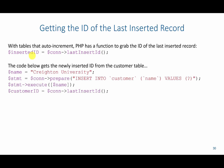For example, if I wanted to insert a new customer named Creighton University, I would say INSERT INTO customer the name and the values with a question mark. This question mark gets substituted with the name via the execute statement to insert the new record. We then look at the connection and get the last inserted ID, which would be Creighton University's new ID, storing it in the customer ID variable.